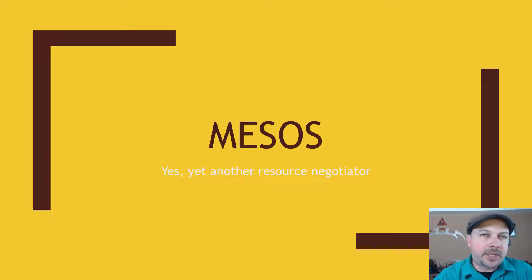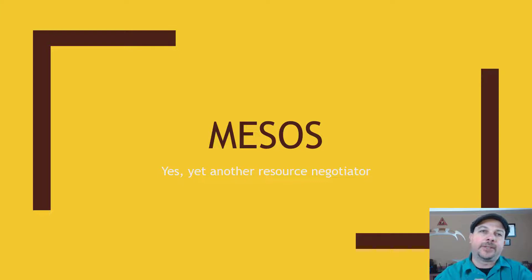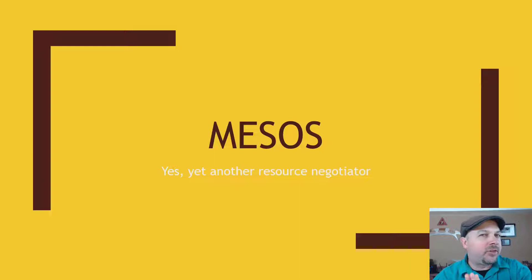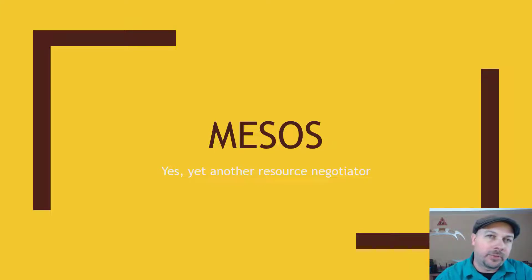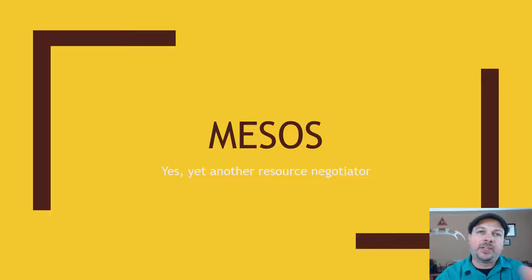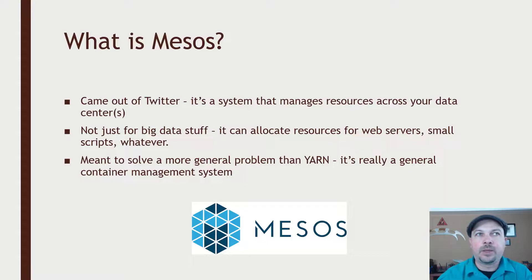Next let's talk about Apache Mesos. Like Yarn, it's another resource negotiator, but Mesos is a little bit different — it's actually much more broad in its scope. We're going a little bit on a tangent here because Mesos isn't directly associated with Hadoop, but it's something you might hear about, so I want you to understand what Mesos is and how it differs from Apache Yarn.